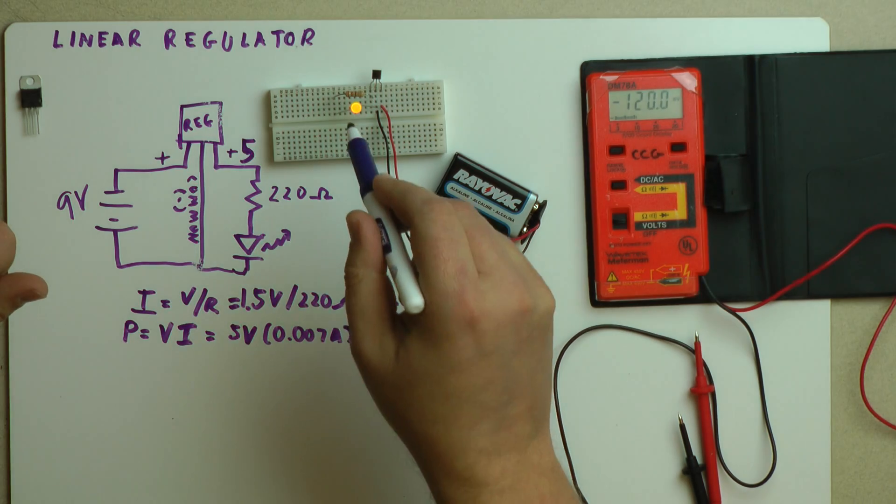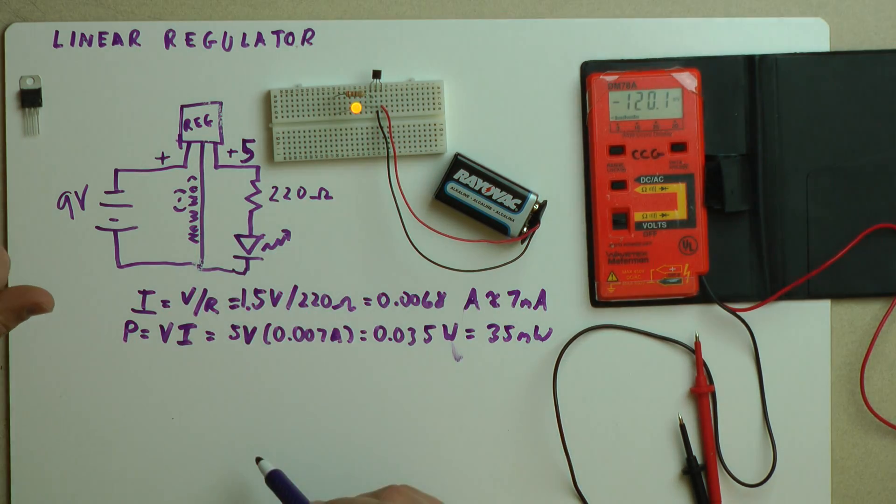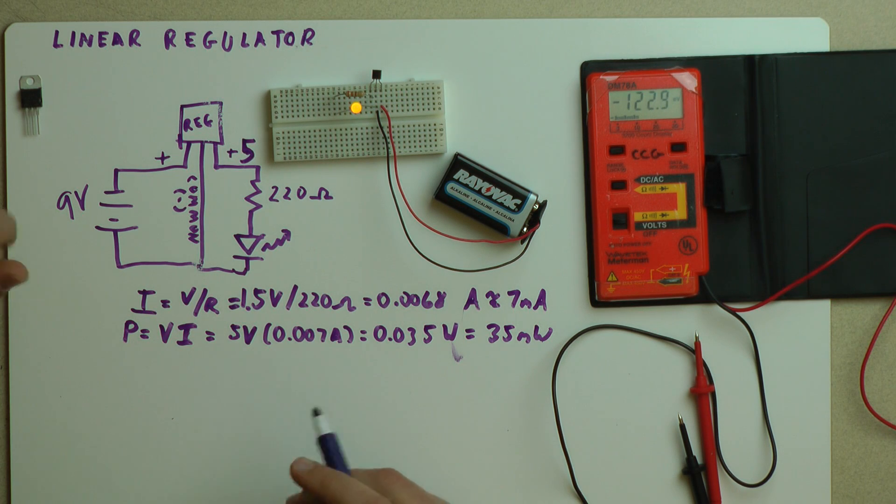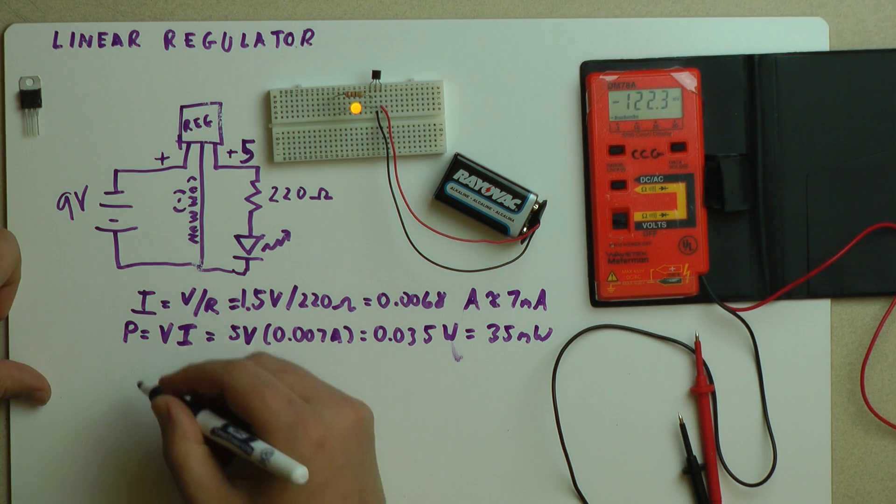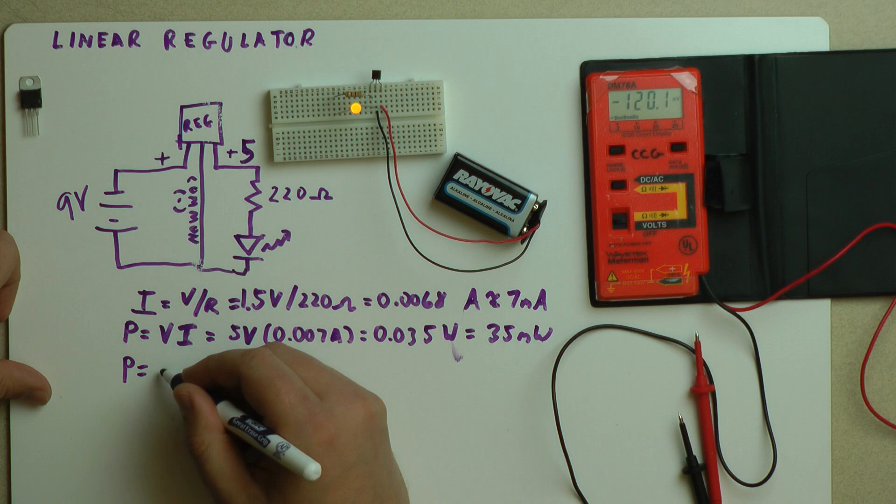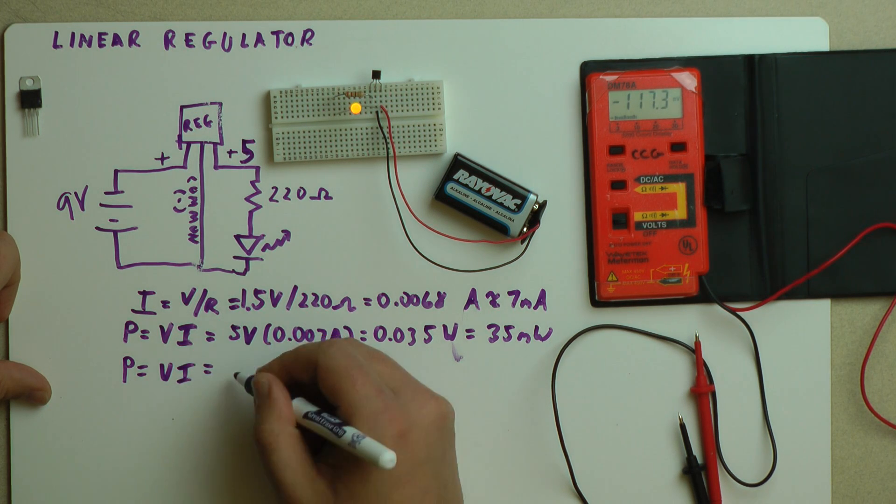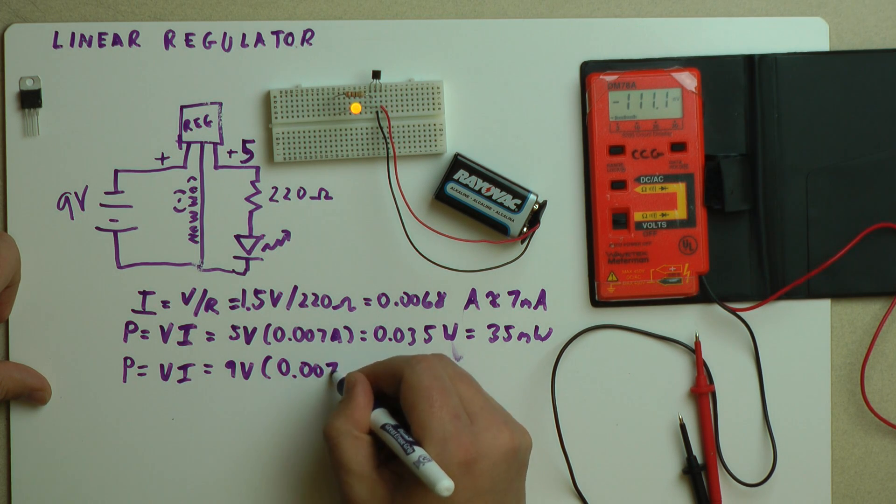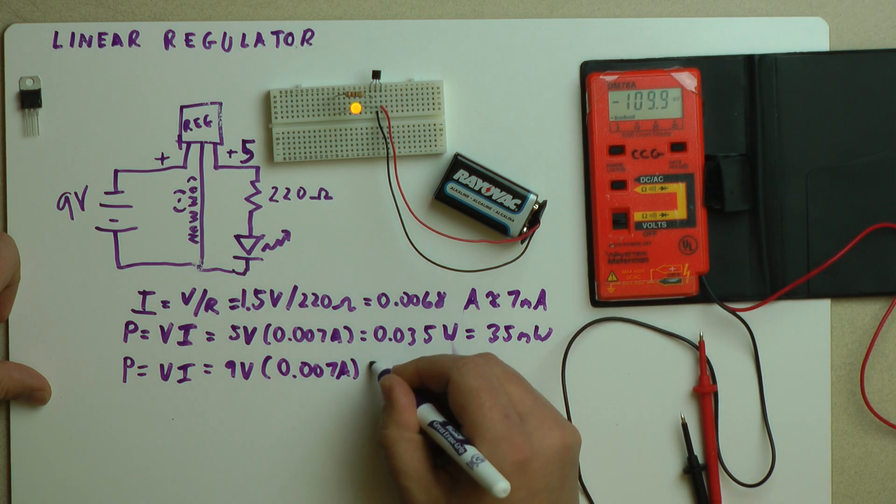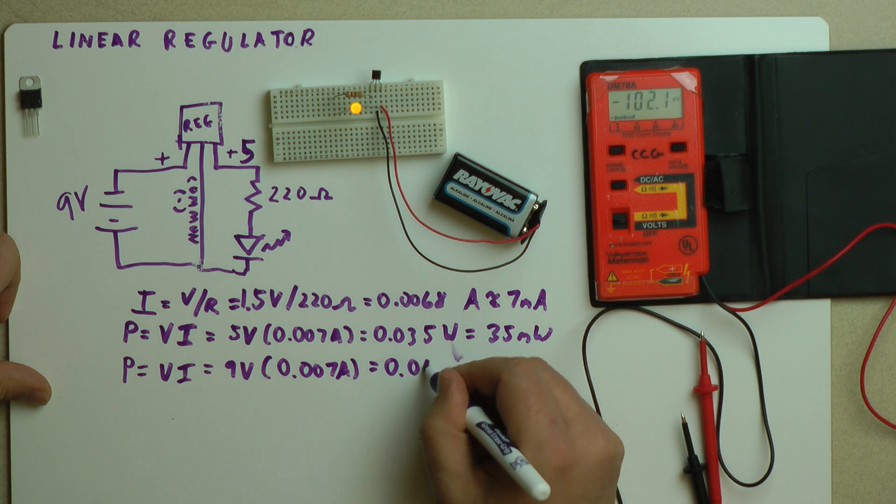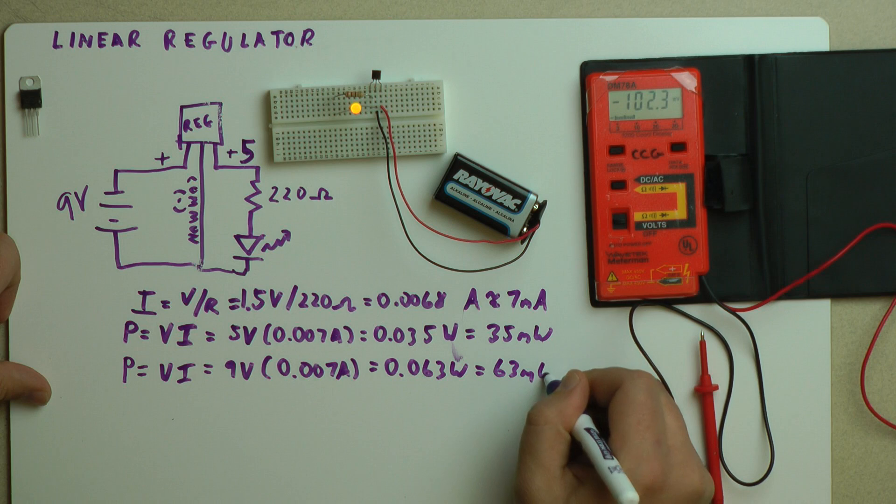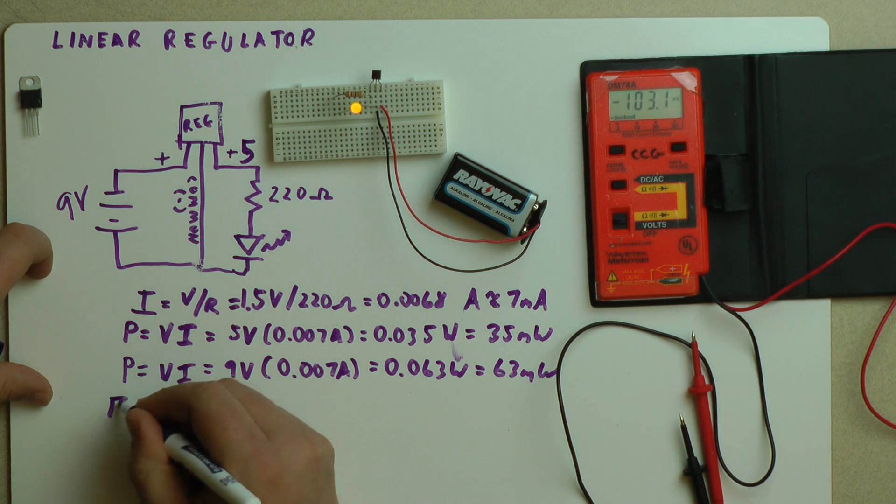The amount of current on the output side of the circuit is equal to the amount of current on the input side of the circuit on the linear regulator, for all intents and purposes. So we can figure out the power on the other side by doing the same equation, but 9 volts is our input and 0.07 amps. And that equals 0.063 watts or 63 milliwatts.